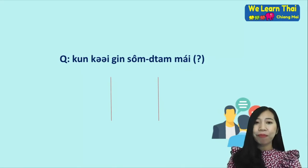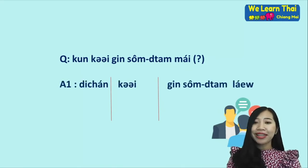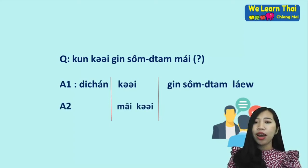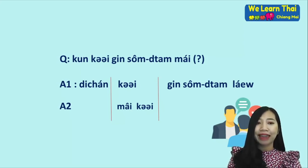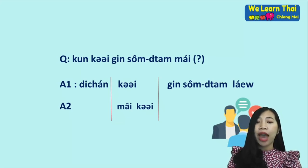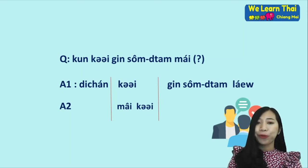Keoi means 'have experience', and mai keoi means 'not have experience'. For example: khun keoi kin som tam mai kha? — Have you ever eaten som tam? Di chan keoi kin som tam laeo — I have eaten som tam. Or: di chan mai keoi kin som tam — I have never eaten som tam. When you have experience, add the word laeo at the end. When you have not had experience, use mai keoi and drop laeo.